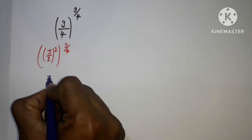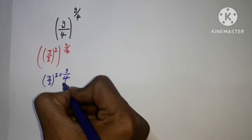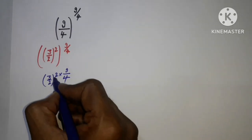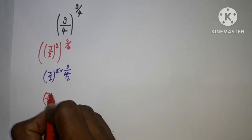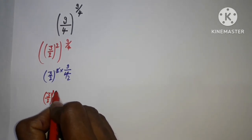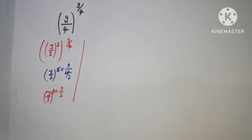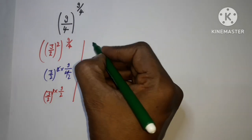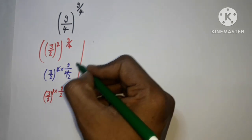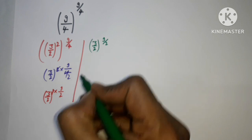So we have 3 by 2 and 2 multiplied by 9 upon 4. The 2 and 4 will cancel, giving us 1 into 9 upon 2. So this can be written as 3 by 2 to the power of 9 upon 2.